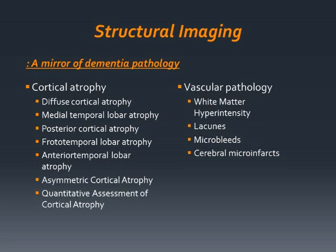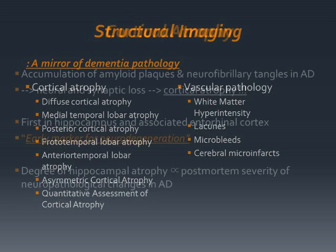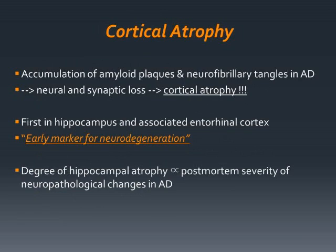In this article, we will cover the cortical atrophy patterns and subjective visual scales for various causes of dementia and vascular pathology findings. Accumulation of amyloid plaques and neurofibrillary tangles in Alzheimer's disease induces neuronal and synaptic loss that finally leads to cortical atrophy.